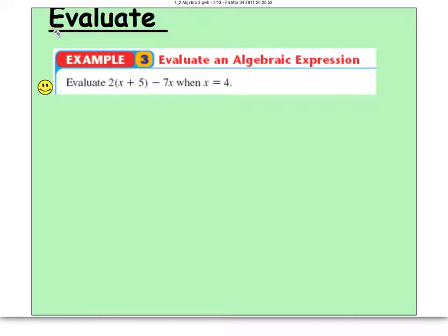Objective C wants us to evaluate for a variable and then use order of operations to simplify. So here's the difference. On this one we have evaluate 2 times x plus 5 minus 7x when x equals 4.